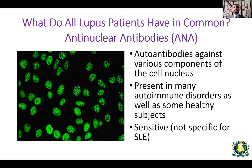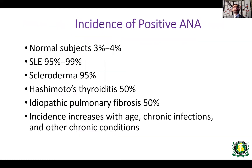Some lupus experts believe there is no such entity as ANA-negative lupus. The ANA is also present in other autoimmune diseases such as scleroderma, Hashimoto's thyroiditis, and idiopathic pulmonary fibrosis — about 50% of patients in each. Interestingly, as patients grow older in age or have chronic infections or other chronic health conditions, the incidence of positive ANA increases. A review article by Robert Schemling in the New England Journal of Medicine in 2003 illustrates that the majority of people with a positive ANA have uncertain clinical significance.